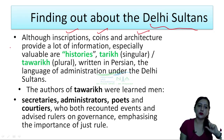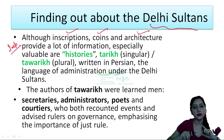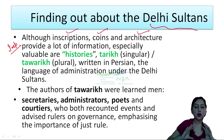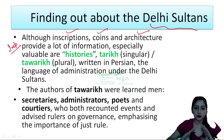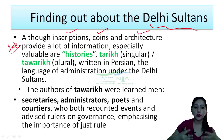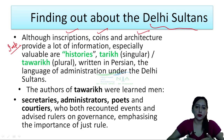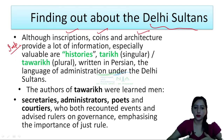These twarikh were written in the Persian language, which was the administrative language of the Delhi Sultanate — this is also important from an exam perspective. The authors of the twarikh were learned people such as secretaries, administrators, poets, and courtiers, who wrote the stories of the Delhi Sultans.